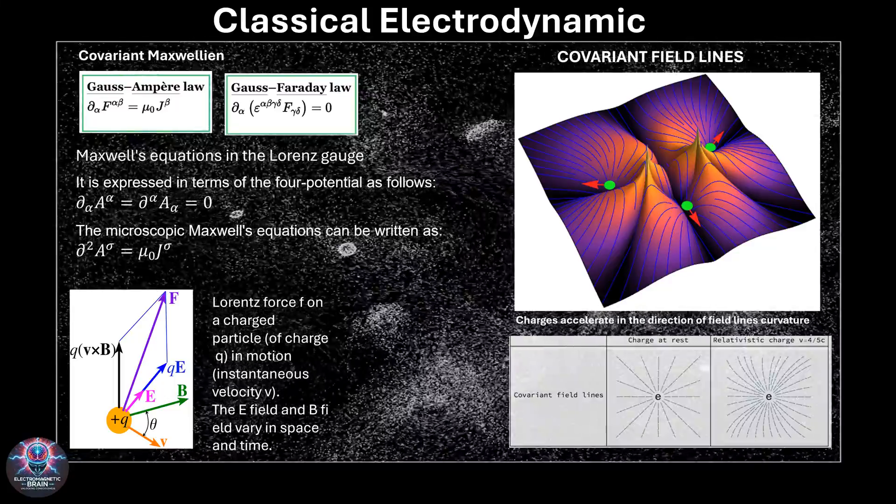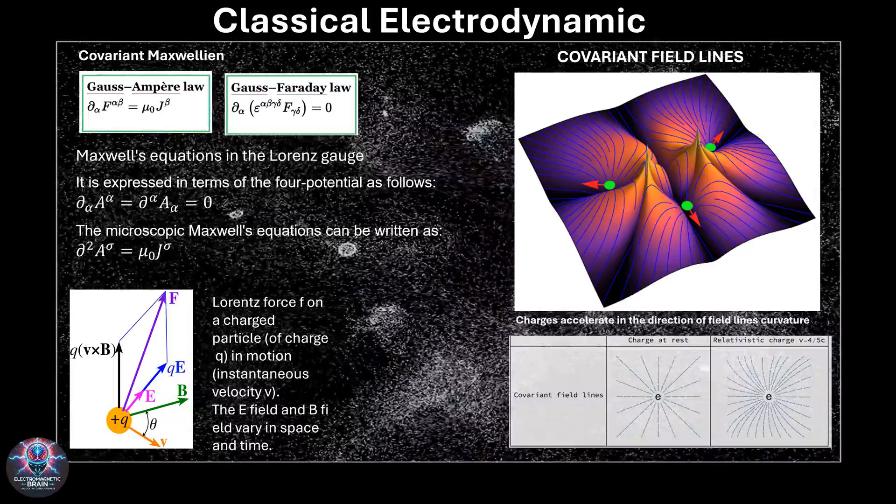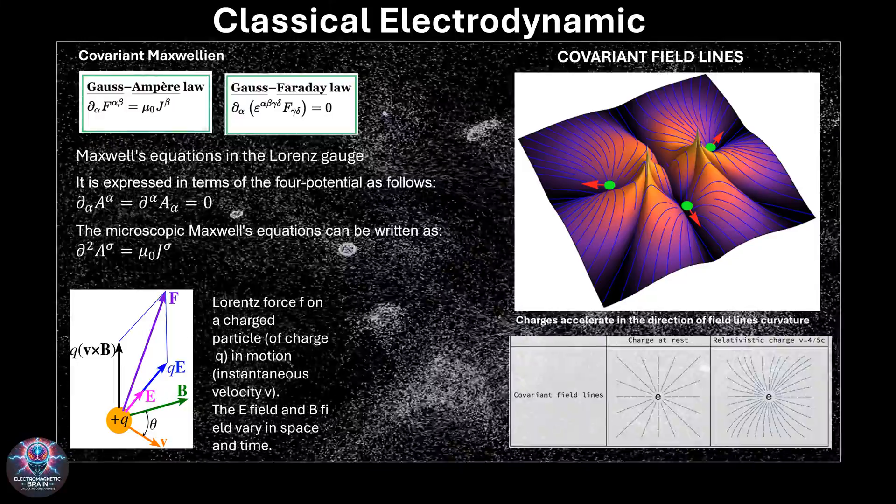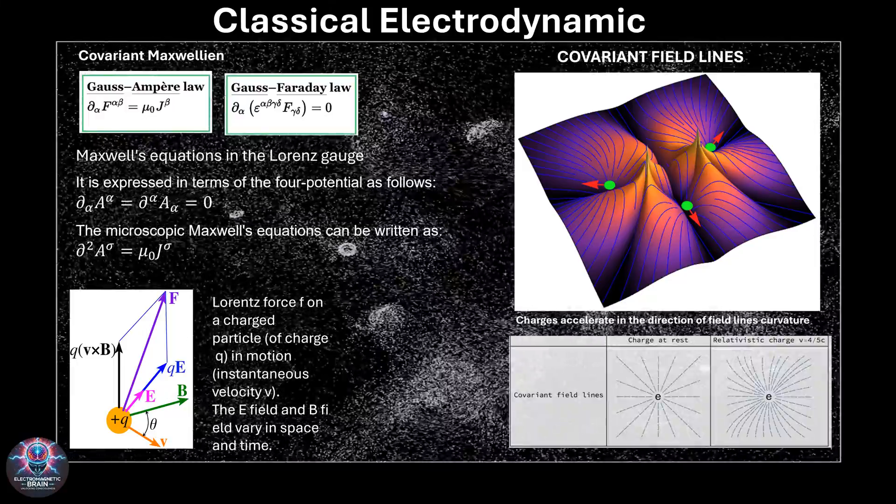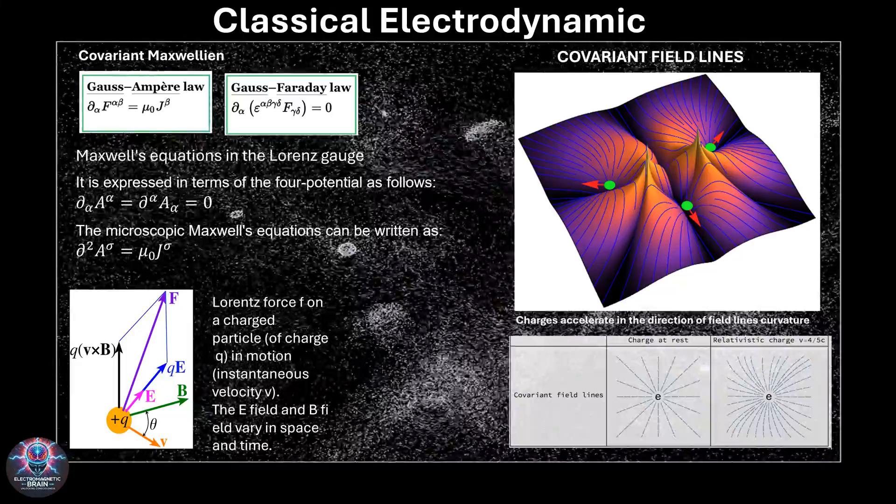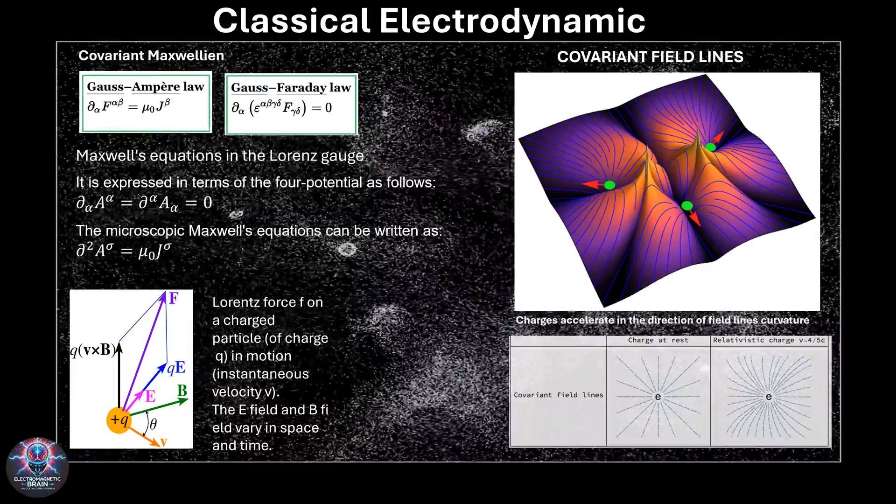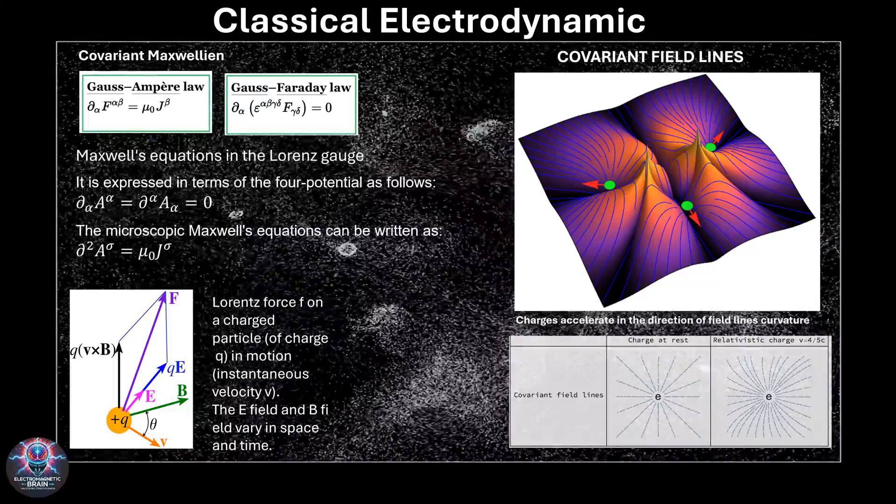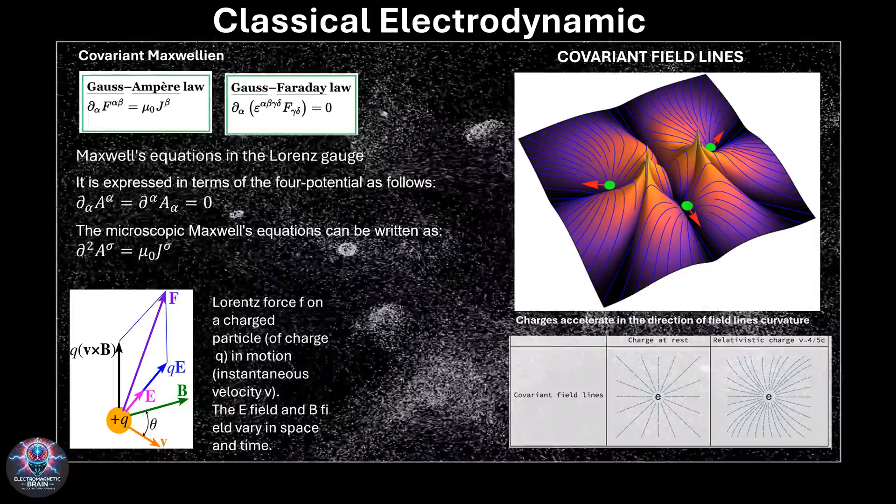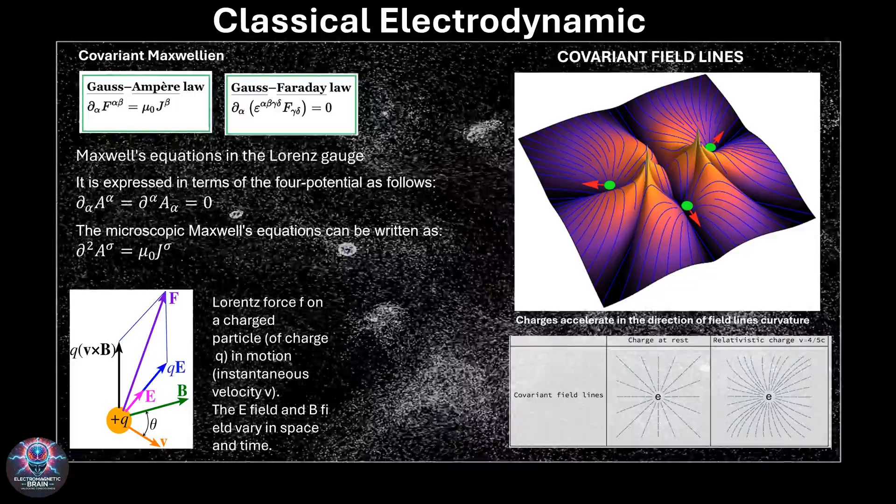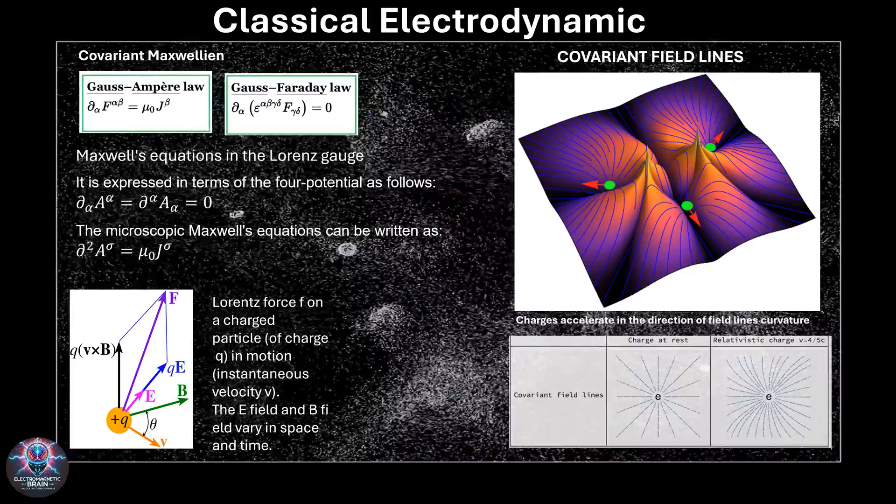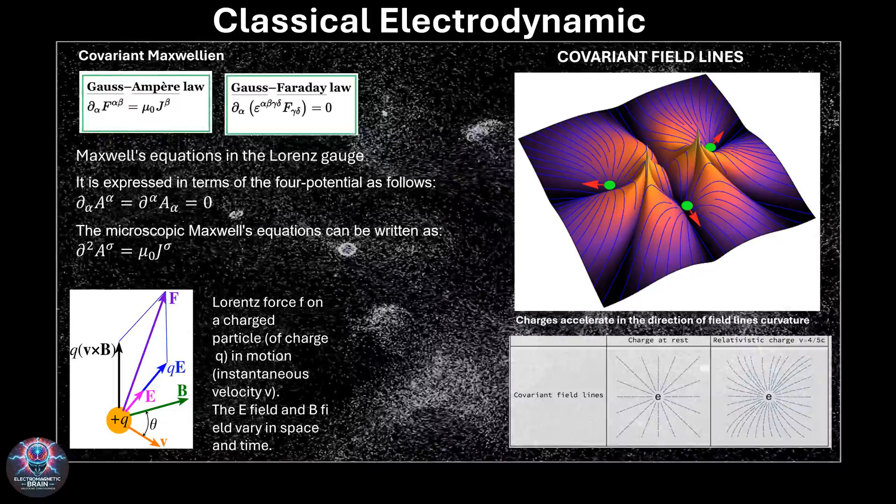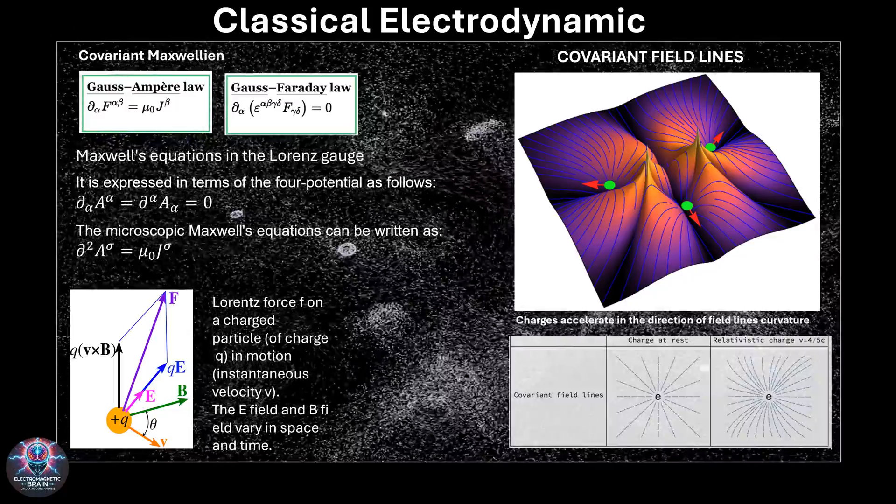This stunning realization showed that electric and magnetic fields were not separate but were two sides of the same coin, woven into the fabric of space-time itself. With the advent of Einstein's special relativity, electromagnetism took on a new form. The electric and magnetic fields were no longer separate but were part of the same electromagnetic field tensor in Minkowski space, F mu nu equals del mu a nu minus del nu a mu. This led to the realization that a moving charge compresses its electric field in the direction of motion and magnetic fields appear as a relativistic effect of moving charges. This unification provided the basis for covariant Maxwell equations, which maintain the same form in all inertial reference frames.